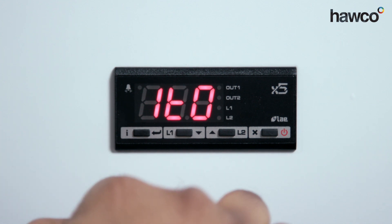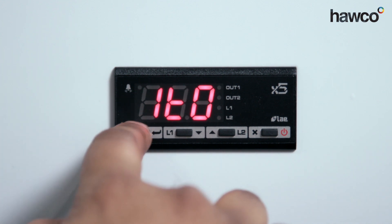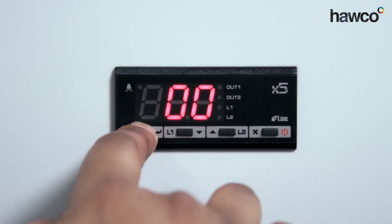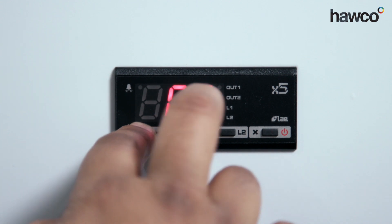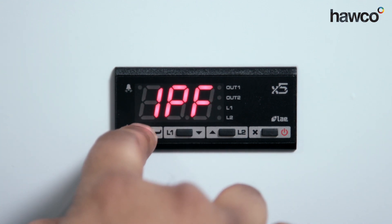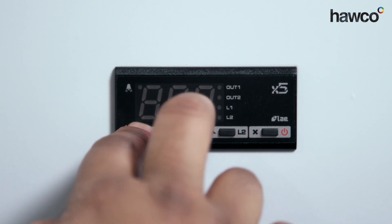The next one is 1TO for minimum off time. In this scenario, we're going to change this down to zero. 1T1 is minimum on time, again, down to zero. The next one's going to be 1PF. We're going to have this set to off.